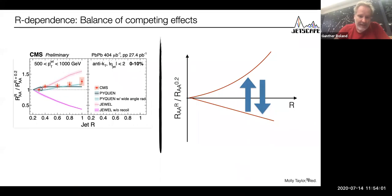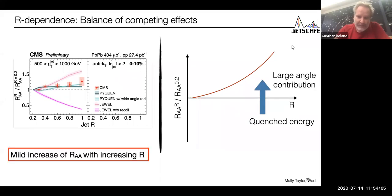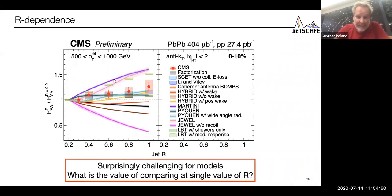What we see in the data is that overall, this positive effect of collecting more of the energy wins, but it's not a landslide. There's a mild increase of RAA with increasing R. So if RAA for the 0.2 jets is 0.5, then here we go up to 0.6. So a 20% change, but we definitely don't get anywhere close to RAA equals one. This is for very high momentum jets, which is one way of reducing the relative influence of the background. Then you see that this mild increase sits in a space of model outcomes that really covers all possibilities with larger changes than seen in the data.